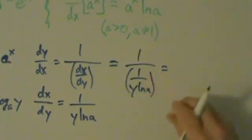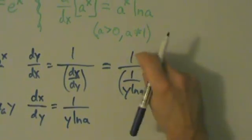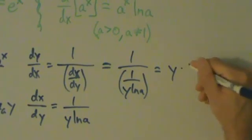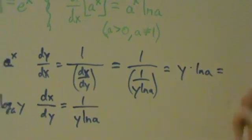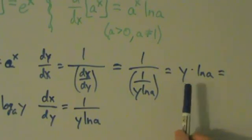So again, 1 divided by 1 over something, take the reciprocal, and then multiply it by the 1 up here. Then what we're just going to have is y times natural log of a. But again, the variable is x, so we don't want to end with y, we want to end with x. And what is y? It's a to the x.